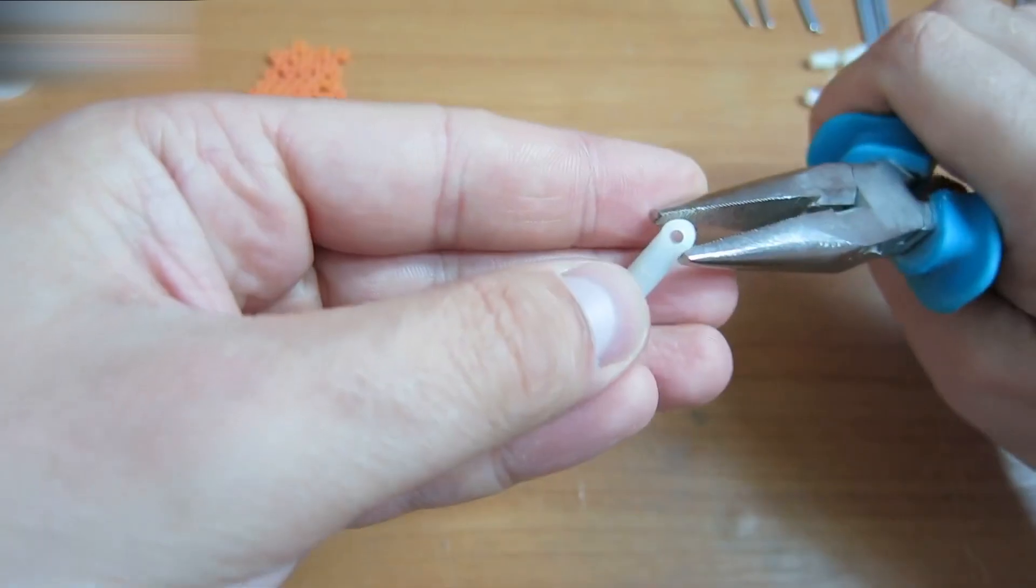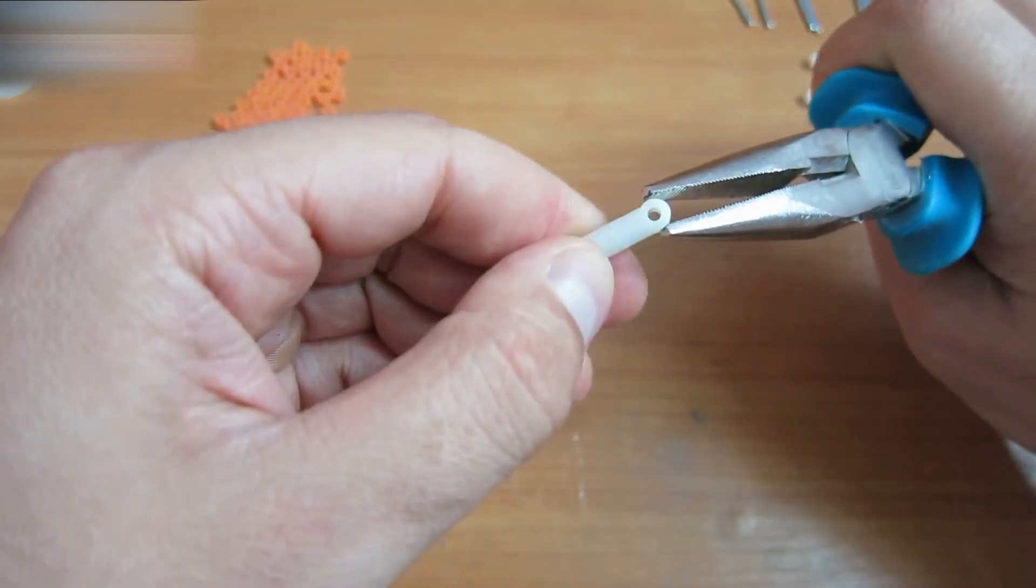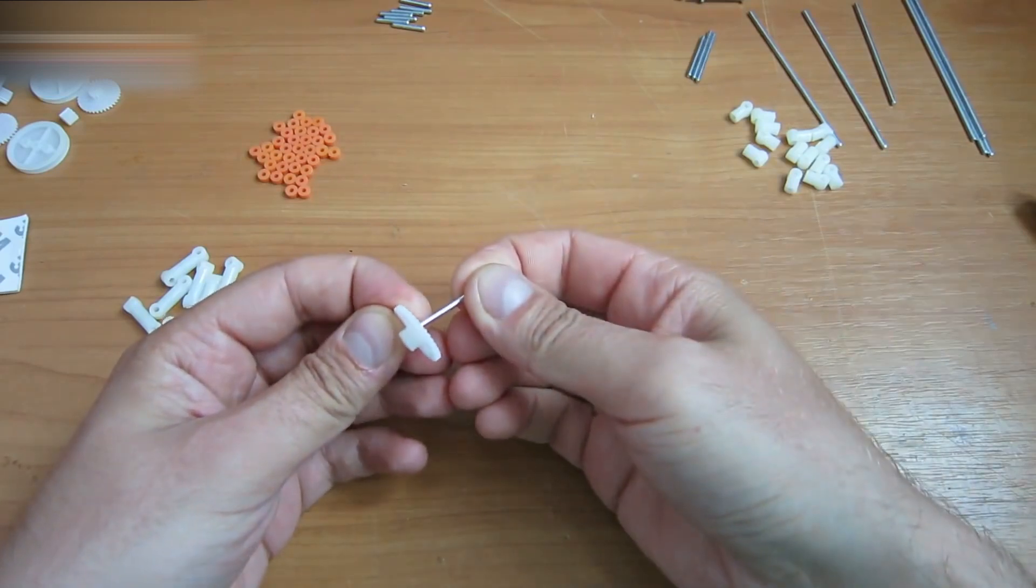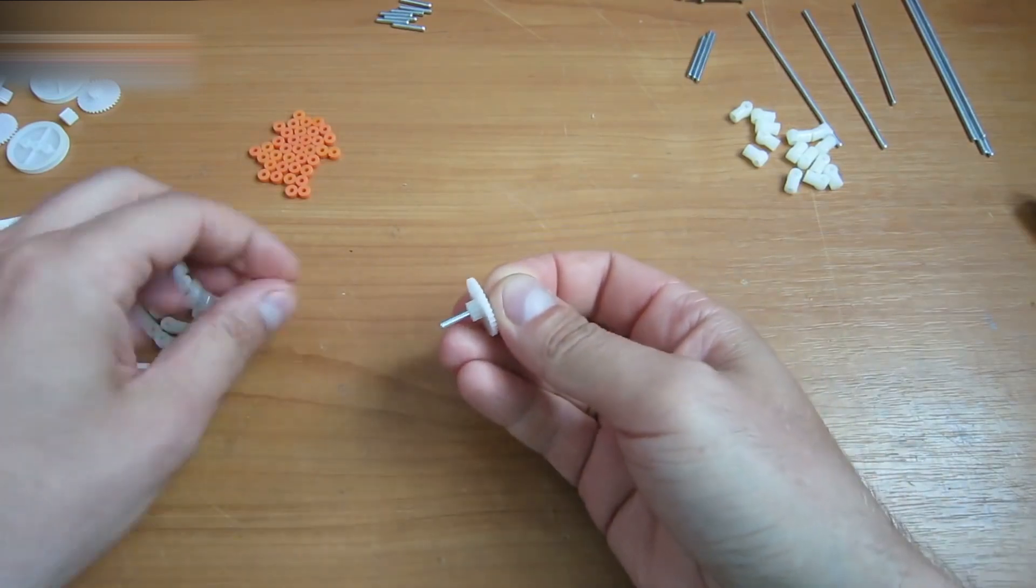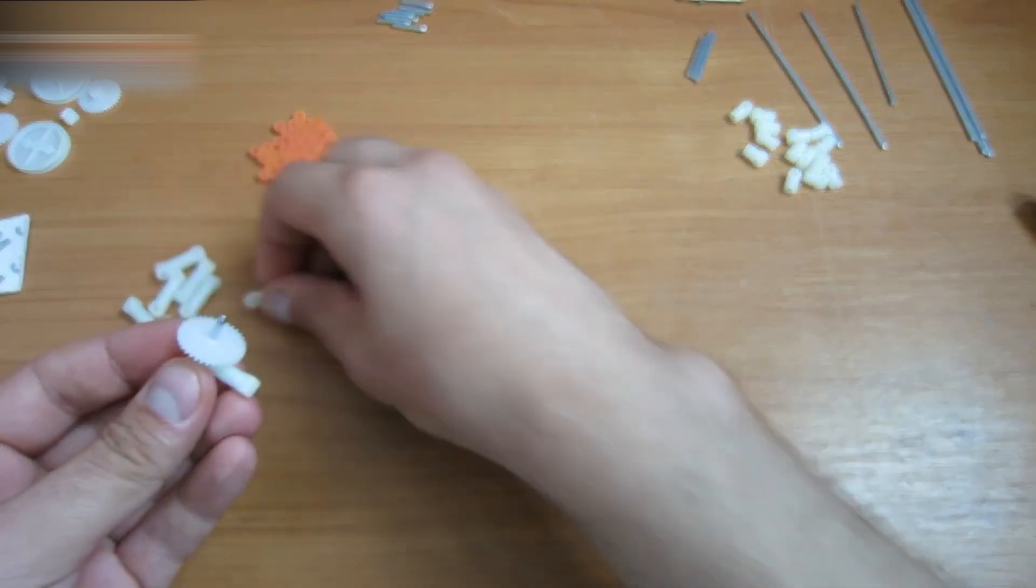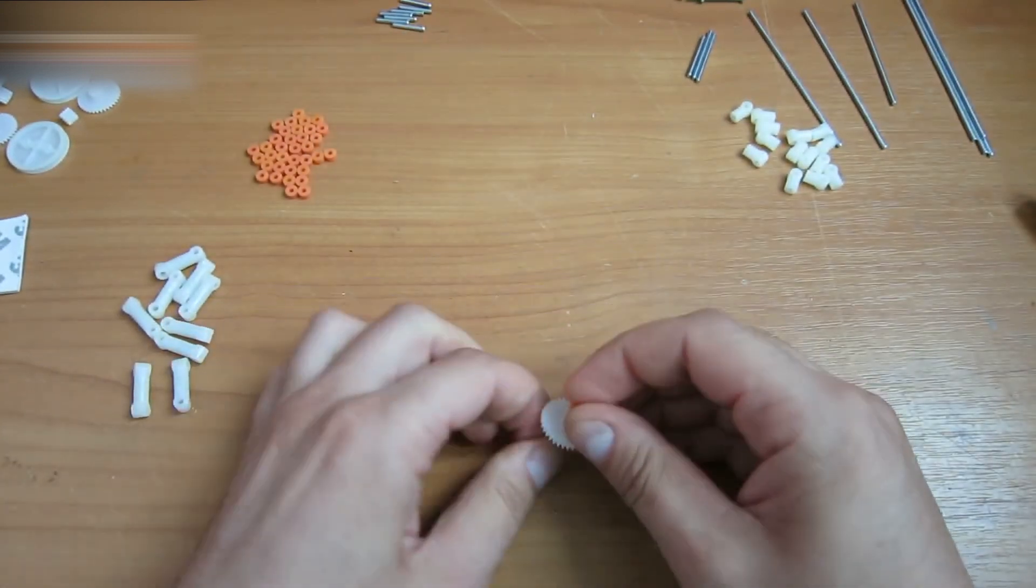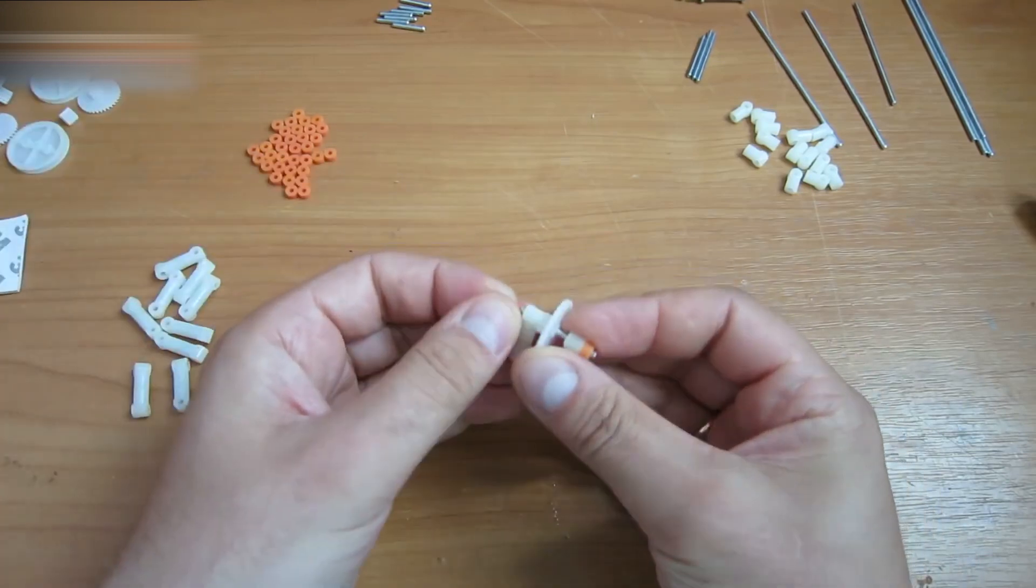There are 16 parts now. They should rotate very tightly. Otherwise, the robot won't work properly. Assemble the next portion of the parts using the parts that you've just finished. Don't forget to use these orange stoppers.